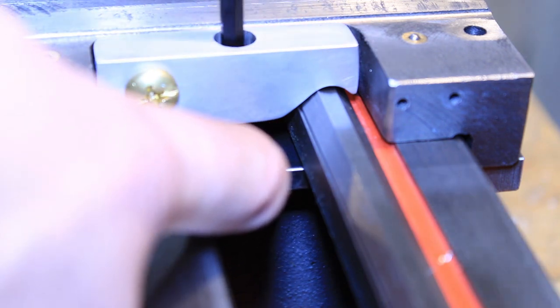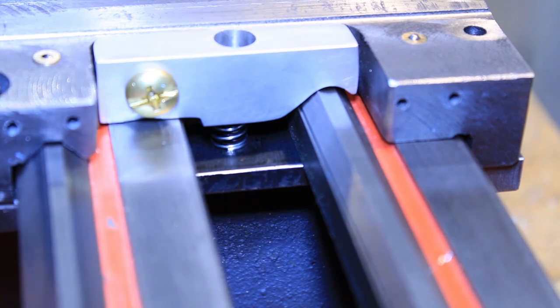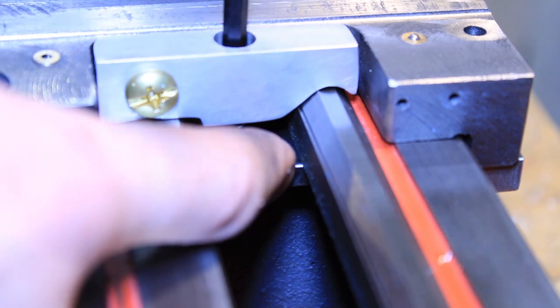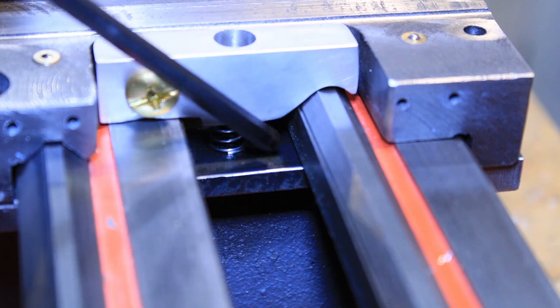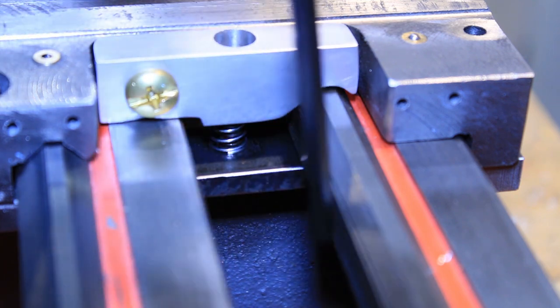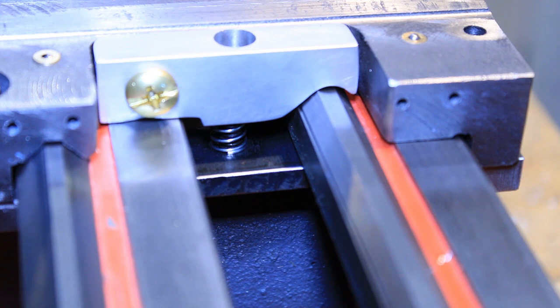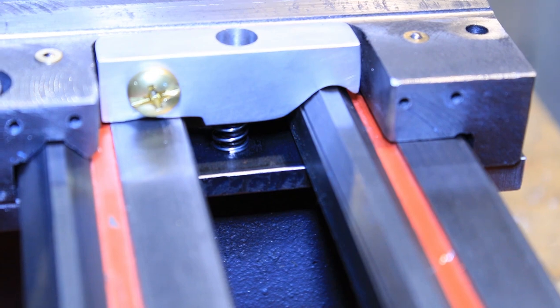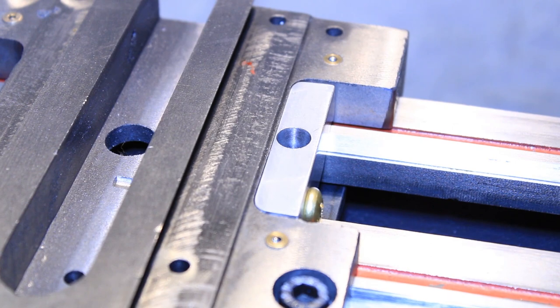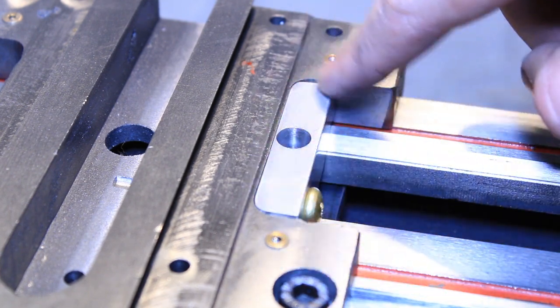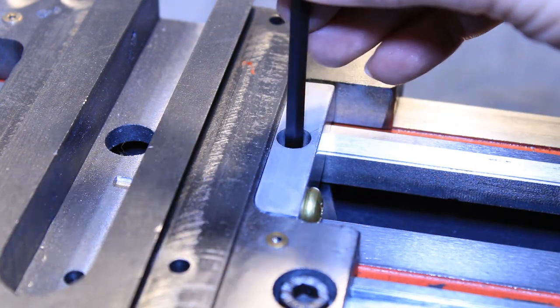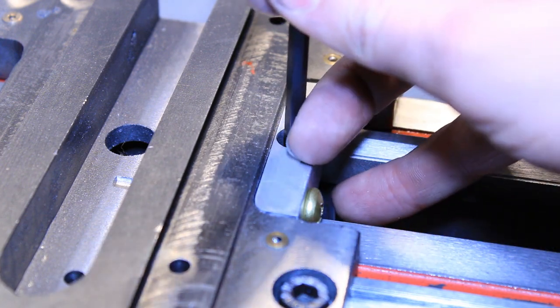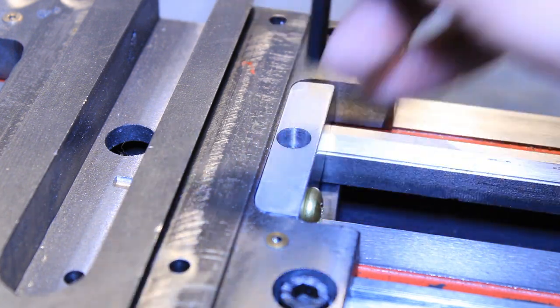But if it does become an issue I'll go back and weld some tabs onto here to act as guides to keep it straight going through the ways. And here's a shot of it from above. You can see I rounded the corners to fit in here better. Just drop the wrench down in there, tighten it up, and that's all there is to it.